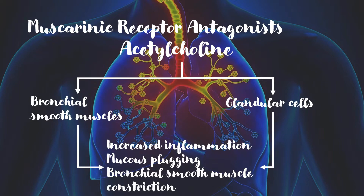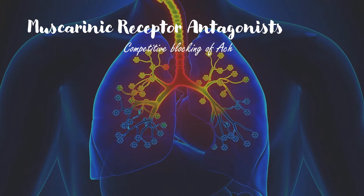Muscarinic receptor antagonists block the surge of ACH on muscarinic receptors of the bronchial smooth muscles of the airway. They function by competitively blocking the binding of ACH to muscarinic receptors, resulting in an anticholinergic response.